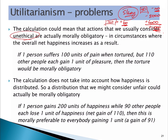That's closely related to the problem that utilitarianism doesn't worry about how happiness is distributed. We'll deal with that in more detail when we look at fairness in the justice series around week three or four. One criticism is: if someone gets 200 units of happiness while 90 people lose one unit each, is that okay? You've got one person gaining and 90 people losing — is that still really an ethical or moral thing to do?